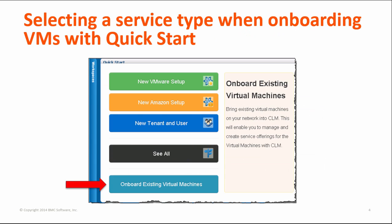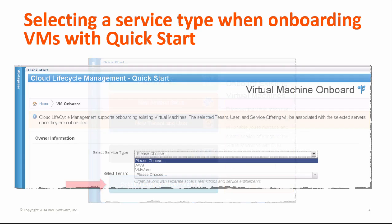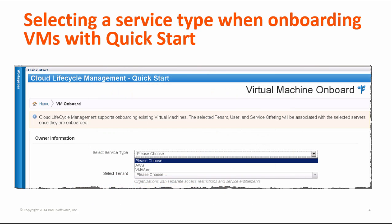When using QuickStart to onboard existing VMs into BMC Cloud Lifecycle Management, you can now specify a service type — VMware or AWS. Making this choice associates the resulting service offering instance with the type of service that originally generated the VM.